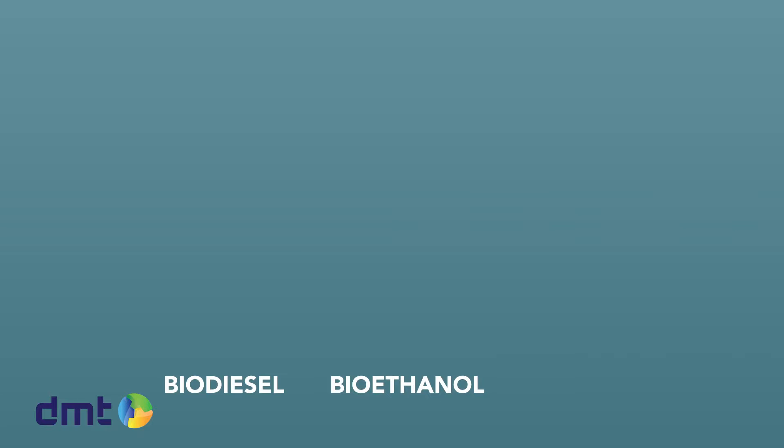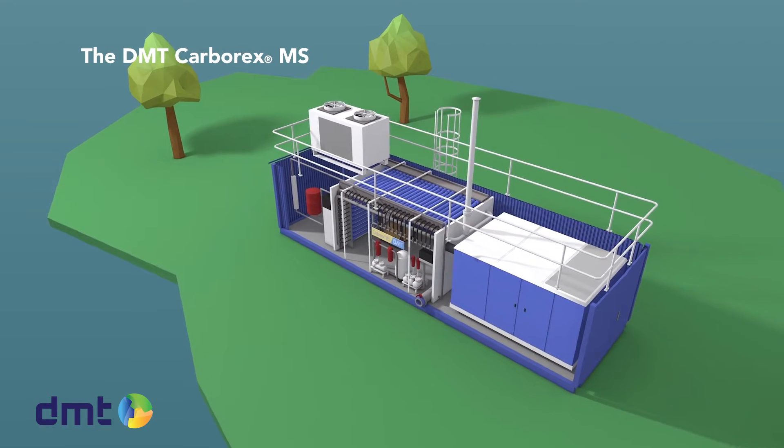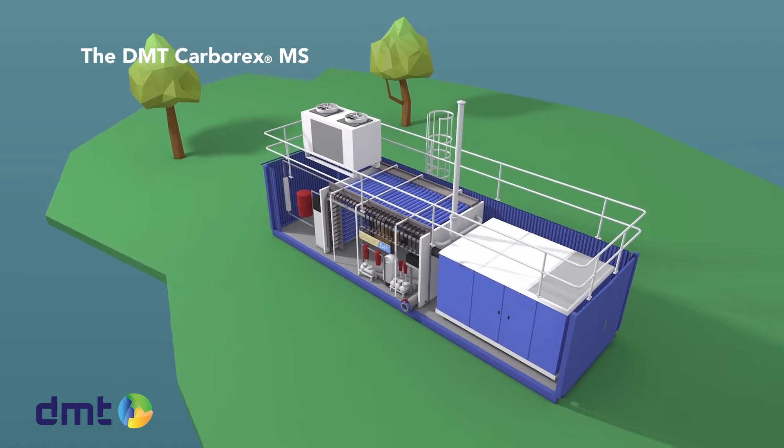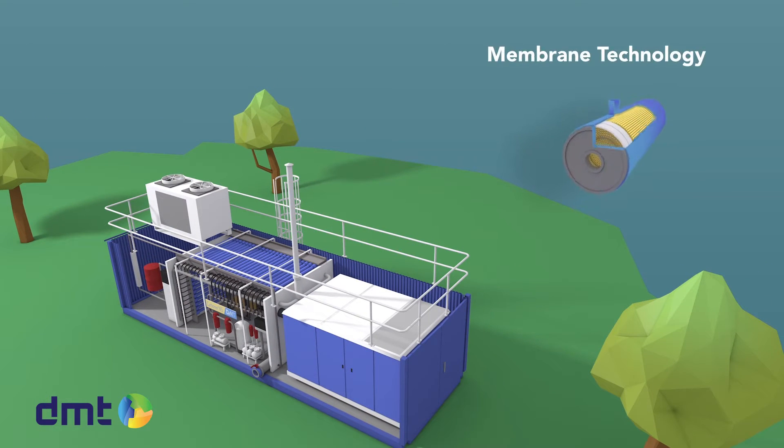Unlike biodiesel and bioethanol, biomethane has better properties than its fossil counterpart, natural gas. Currently, for upgrading biogas, DMT's Carborex MS is the best solution on the market. The Carborex MS separates methane from carbon dioxide using membrane technology.